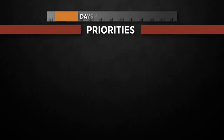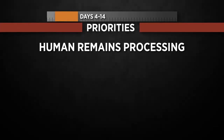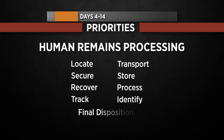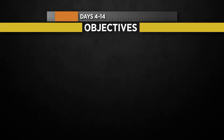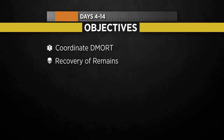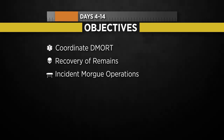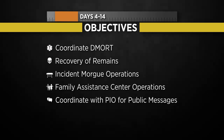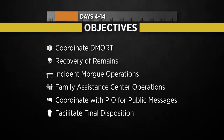During days 4 through 14, the priority will be managing the processing of human remains to locate, secure, recover, track, transport, store, process, identify, and conduct final disposition of the deceased. Primary objectives include coordinating DMORT operations as requested, assisting in the recovery of human remains, establishing and supporting incident morgue operations, continuing and supporting Family Assistance Center operations and services, continuing coordination with the PIO and dissemination of public information, and facilitating the release and final disposition of human remains and personal effects if possible.